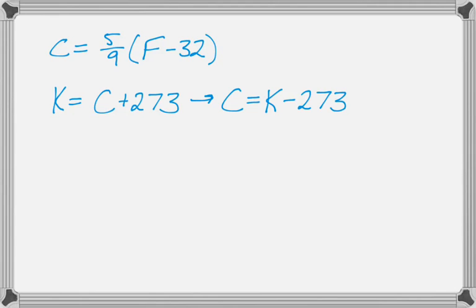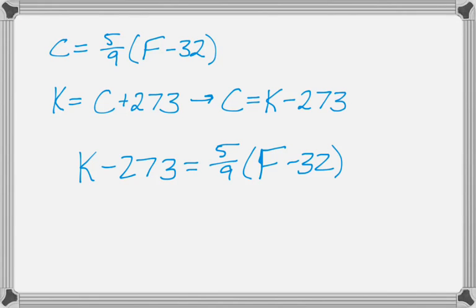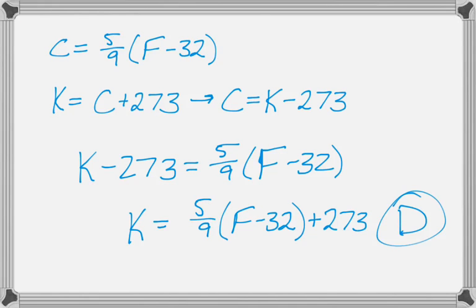Then we go to the top equation, c equals blah blah blah, and replace that c with k minus 273. So I get this. And then looking at the answer choices, you don't need to simplify this very much. You just need to move that 273 over. So we get this, and looking, that's option D.